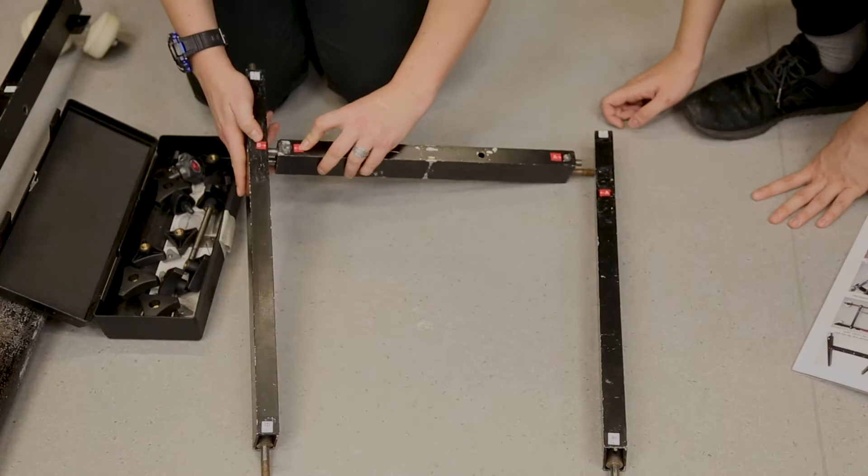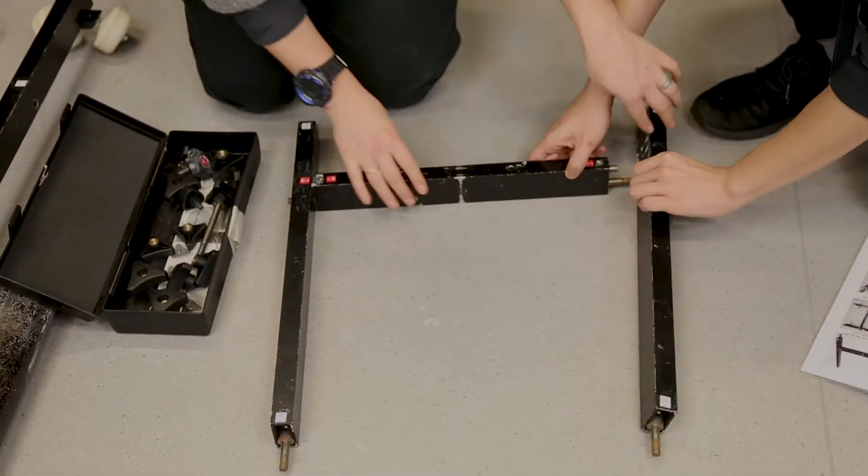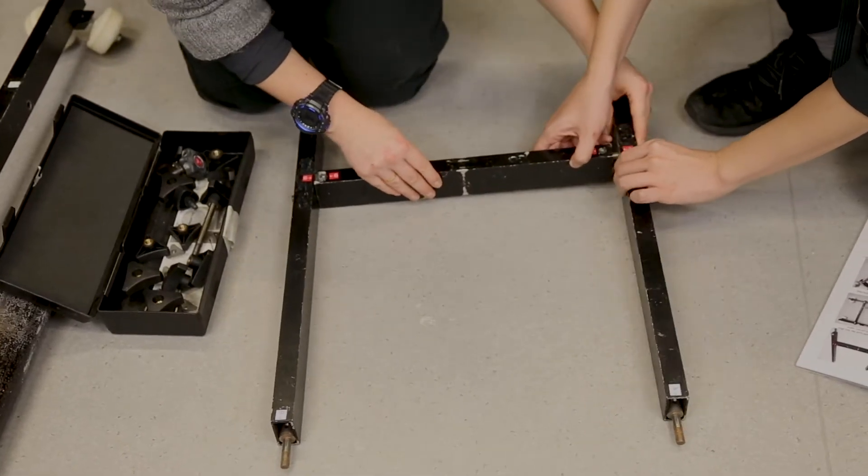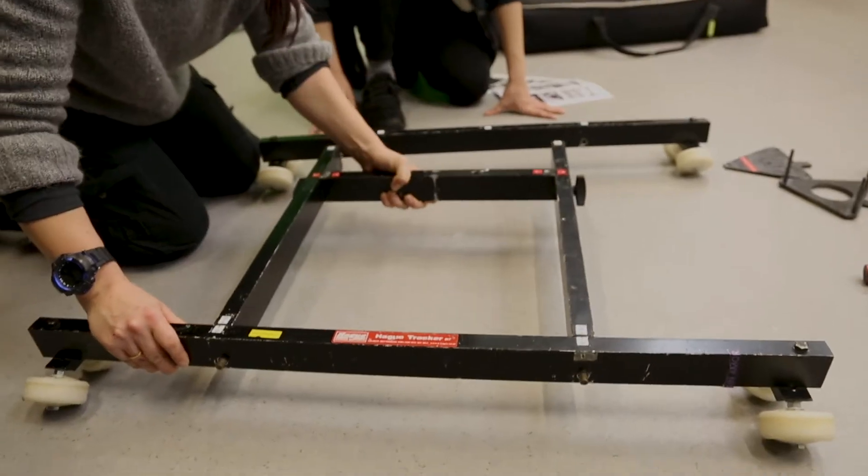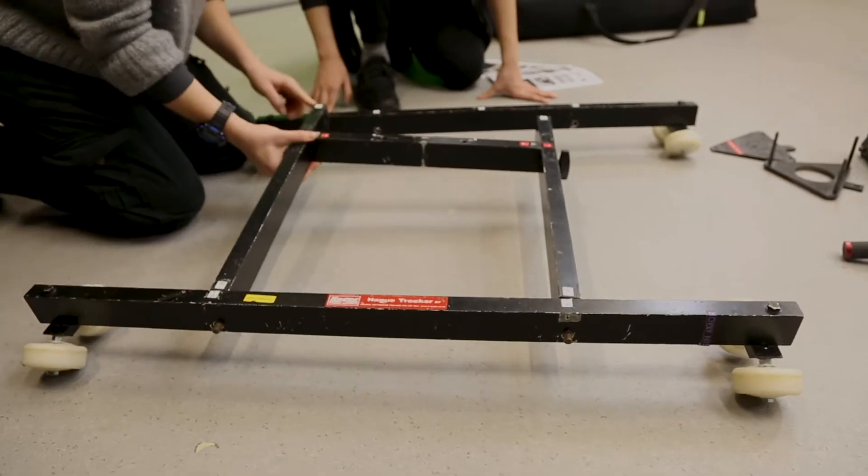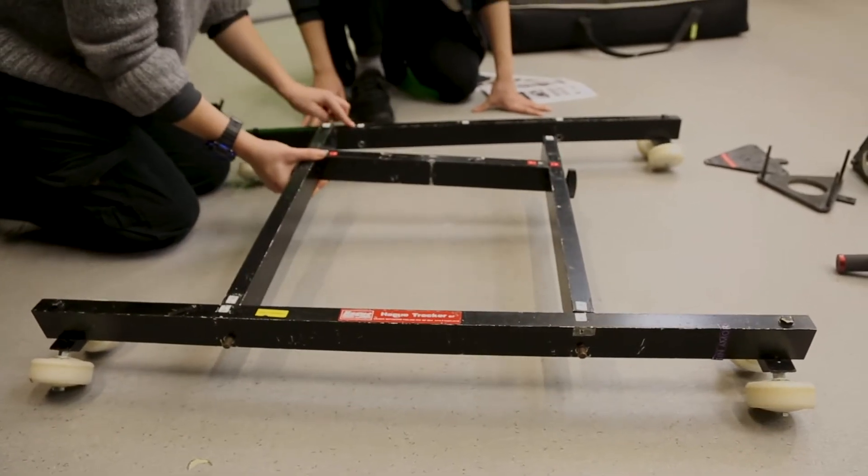Start by connecting the mainframes. Red label letters need to connect to each other. Use large screws to tighten the frame. Connect tracking wheels to the frame. Check labels for the appropriate color and letters.